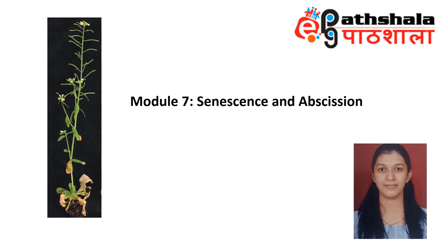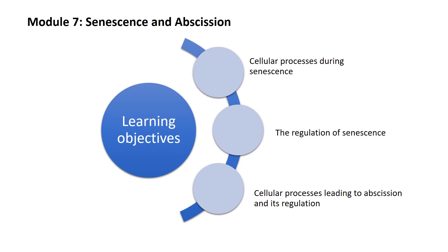In this module, we will see two processes that are degenerative in nature but still are of great significance to plants. These are senescence and abscission. Plant senescence defines the last stage of the developmental program and leads to the death of the plant or its organ. Abscission is the process by which plants are able to shed organs when they are no longer required. The learning objectives of this module include understanding the cellular processes that lead to senescence, regulation of senescence by hormones and genes, and lastly, the process of abscission and the genes involved in its regulation.